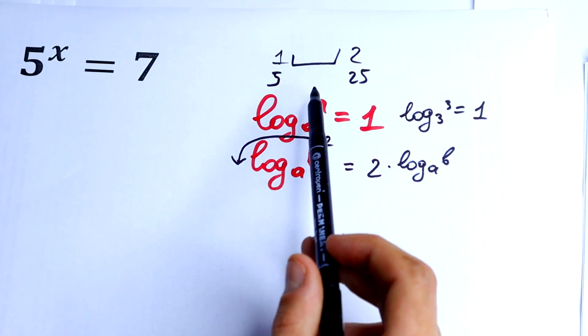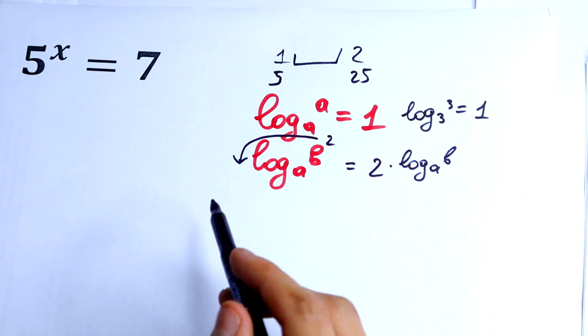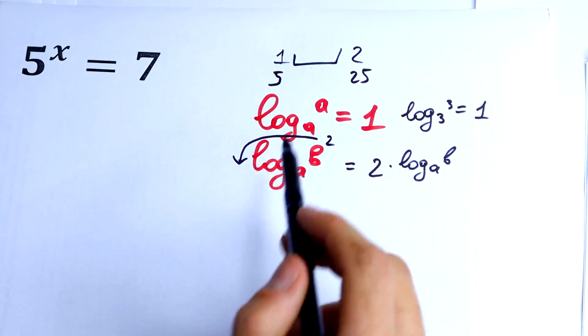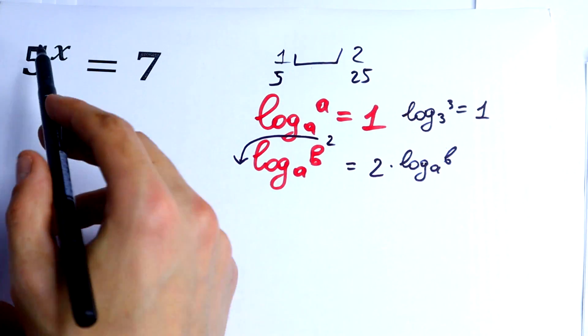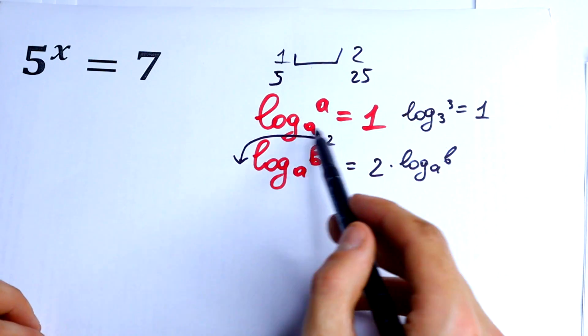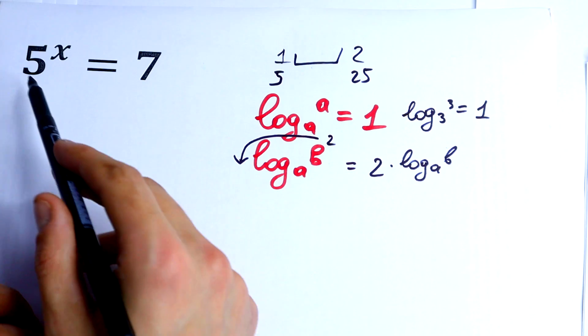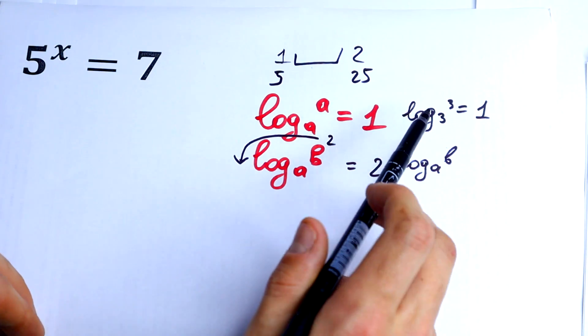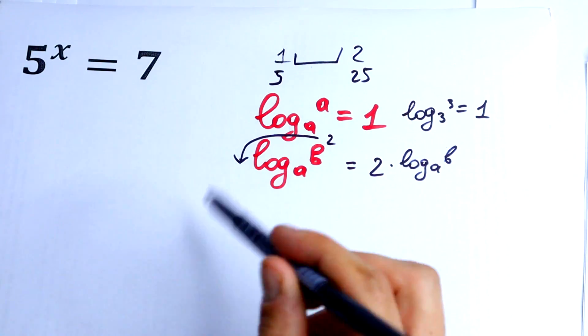The base will be log 5 because we don't need x in an exponent. We can easily calculate this if we have log 5 from both sides.